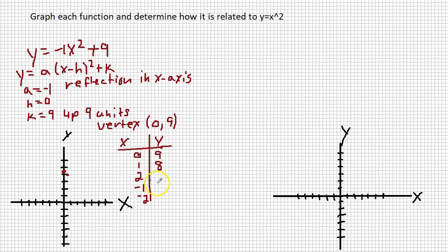And then I plug in 2. 2 squared is 4. Negative 1 times 4 gives me negative 4. Negative 4 plus 9 gives me 5. Now, what's really nice, let me plot this. So 2, there's 2, 4, here's 5.